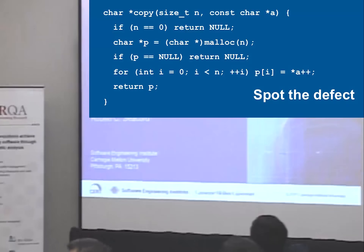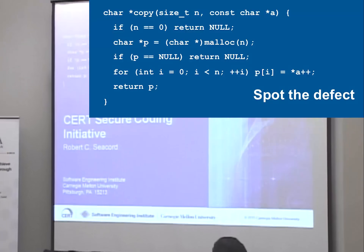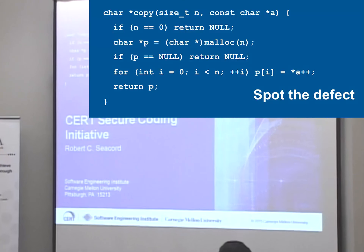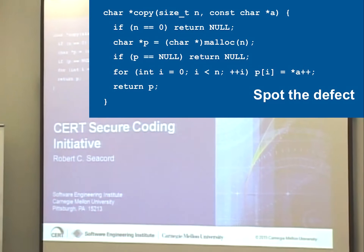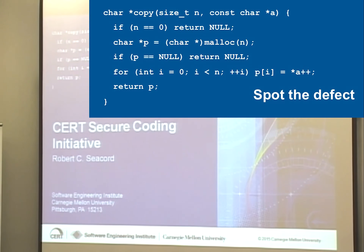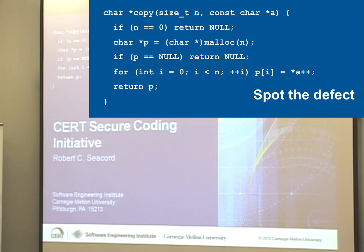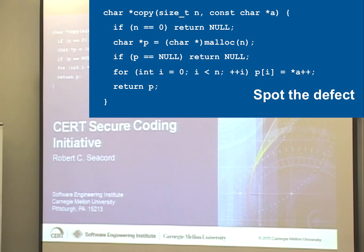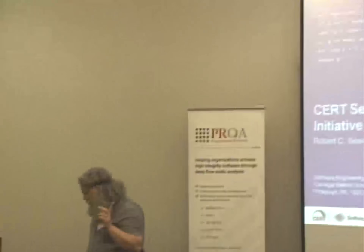This is C — C99 and later lets you declare variables anywhere, which is kind of a nice thing, really, because you can also have variables declared inside the for loop. So you can say, for example, int i and declare it locally there.